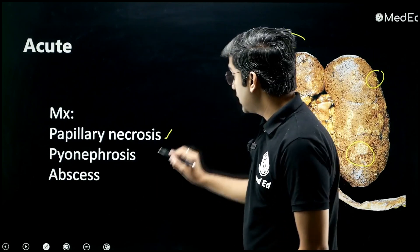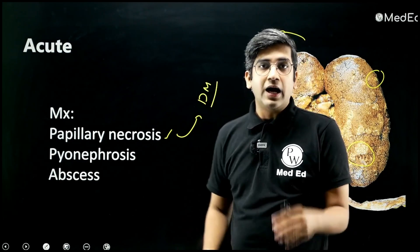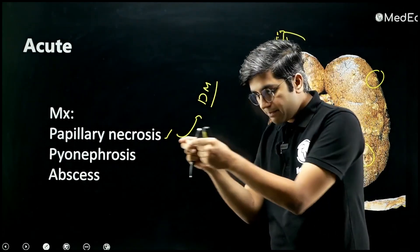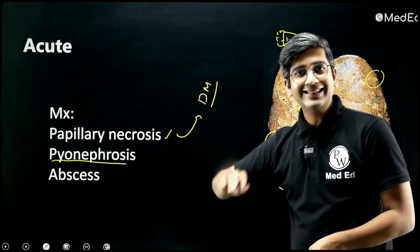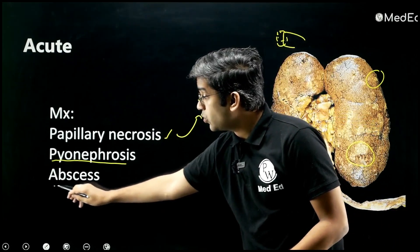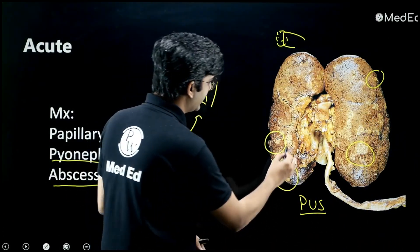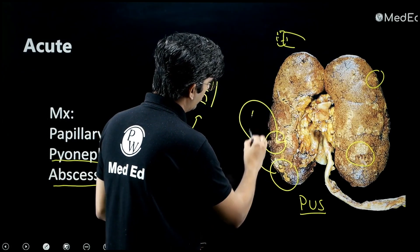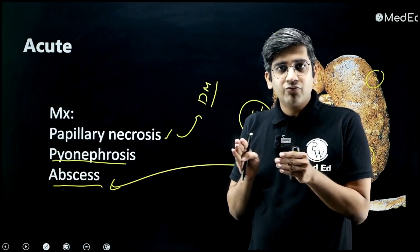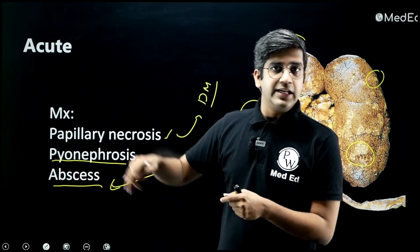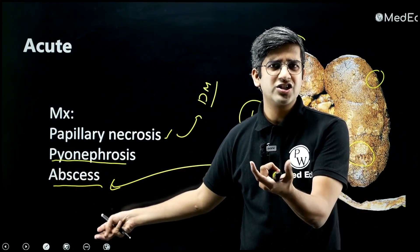Papillary tip necrosis is also seen in diabetes mellitus, due to increased chance of infection. The tip of the papillae undergoes death. It can also involve the entire kidney, and can even extend outside the kidney forming a pus-filled collection — though not quite a perinephric abscess. It can involve the tip of the papillae, the pelvis, and microscopically you see necrosis and neutrophils — an acute inflammatory process.